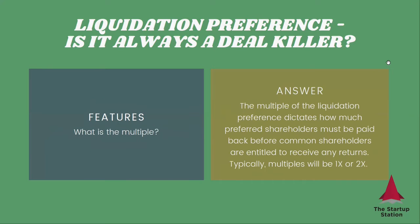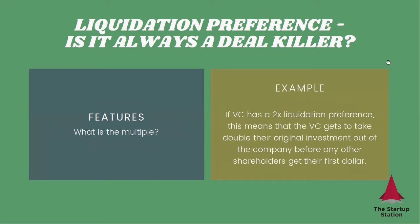Another thing to consider when you see liquidation preference is a multiple. So what does it mean? The multiple is that guaranteed return. So when you see that a VC has a two-times liquidation preference, it means that that VC will get to take double their original investment out of the company before anybody else gets paid.